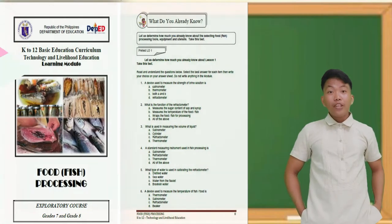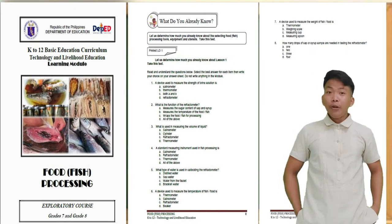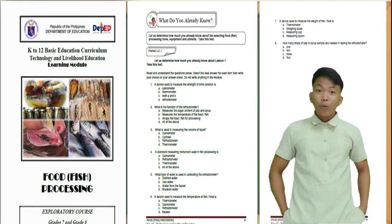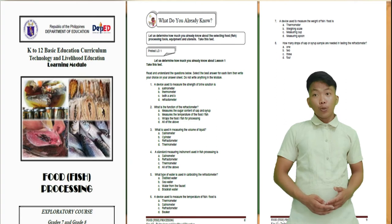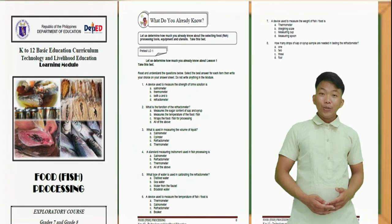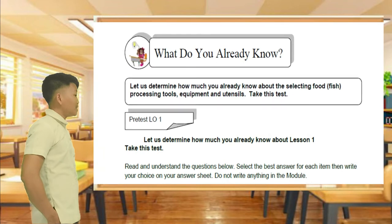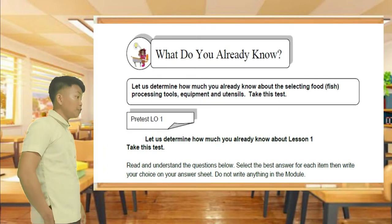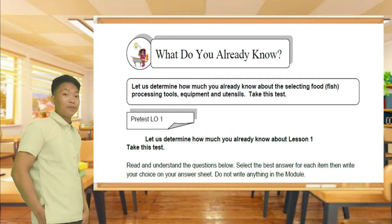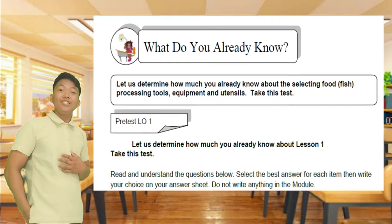I want you to open your module to the pretest part to determine what you already know about selecting food and fish processing tools, equipment, and utensils. Take this test: read and understand the questions below, select the best answer for each item, then write your choice on your answer sheet, and do not write anything in your learning module.